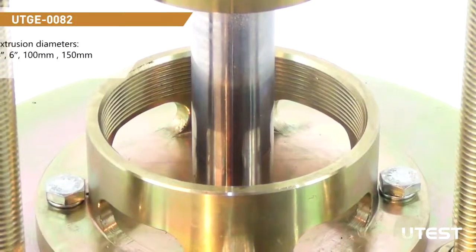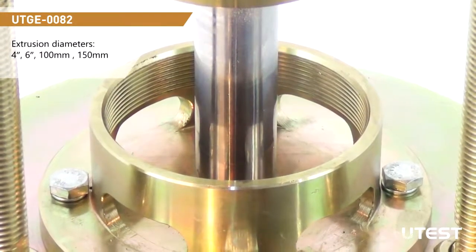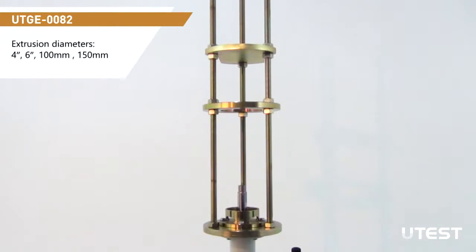It can also be used for the extrusion from Shelby tubes. The extruder has 60 kN load capacity and 650 mm ram travel range.